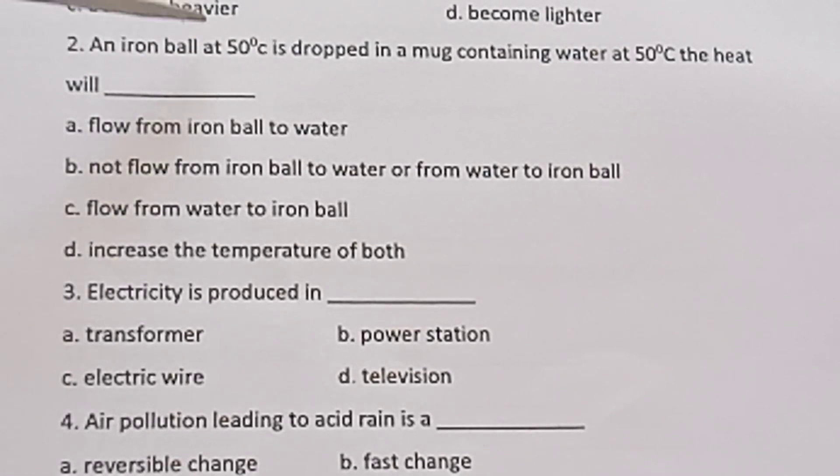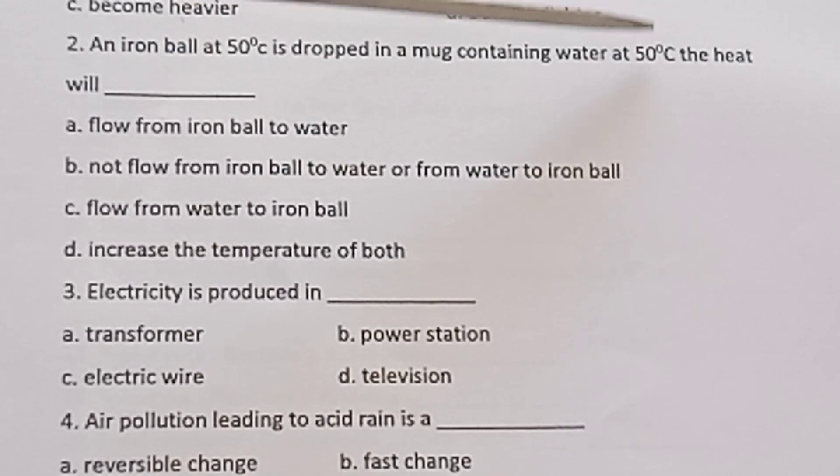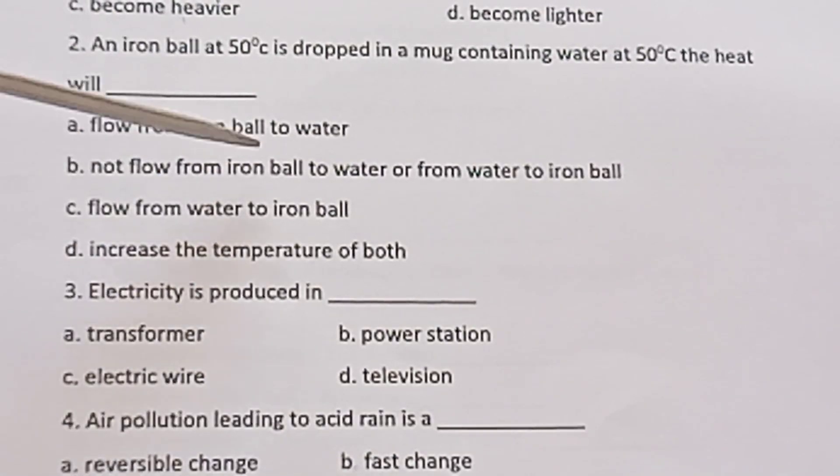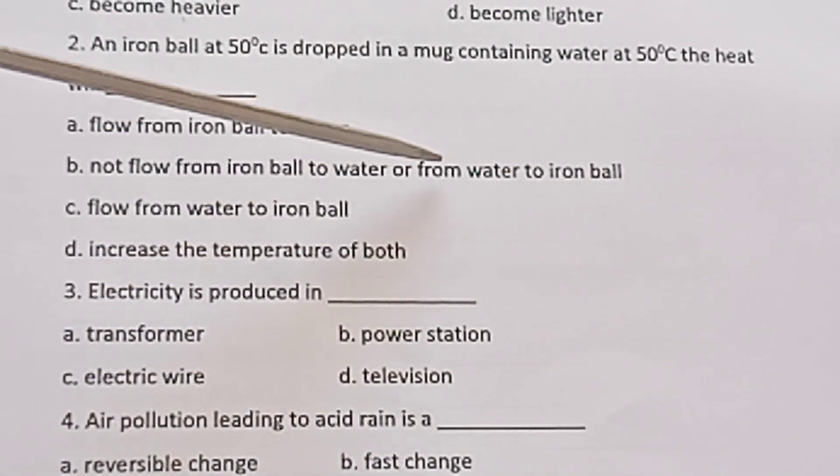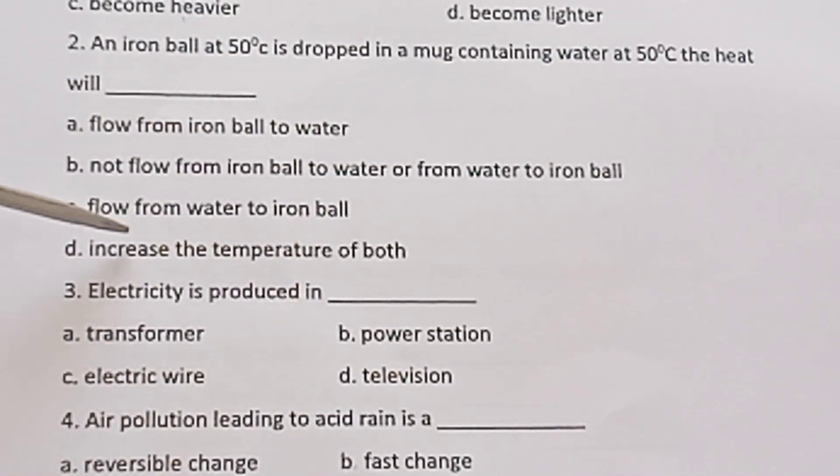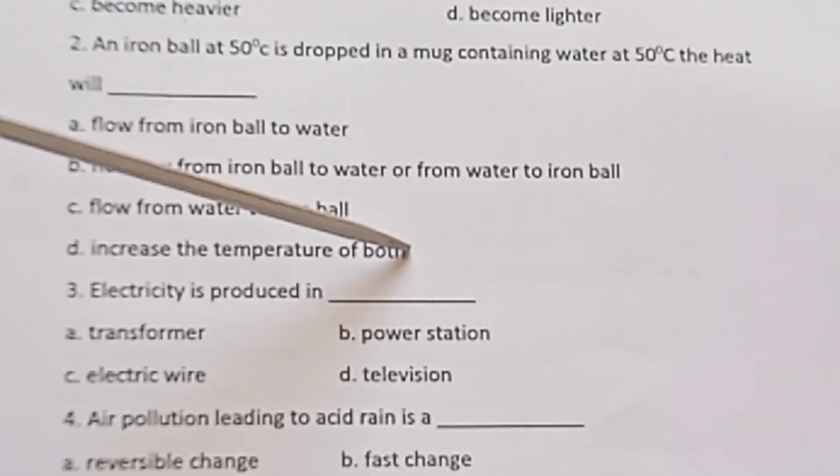Question 2: An iron ball at 50°C is dropped in a mug containing water at 50°C. The heat will: a) flow from iron ball to water, b) not flow from iron ball to water or from water to iron ball, c) flow from water to iron ball, d) increase the temperature of both.